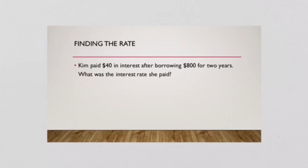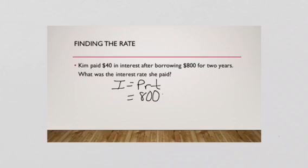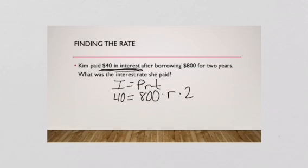These are going to be a little different kind of problems — some of the values are missing and we have to solve for them. Kim paid $40 in interest after borrowing $800 for two years. What was the interest rate she paid? We know she started by borrowing $800, we don't know the interest rate, time is two years, and the interest was $40. So we have $40 equals $800 times 2, which is $1,600, times R. Then we divide both sides by $1,600.